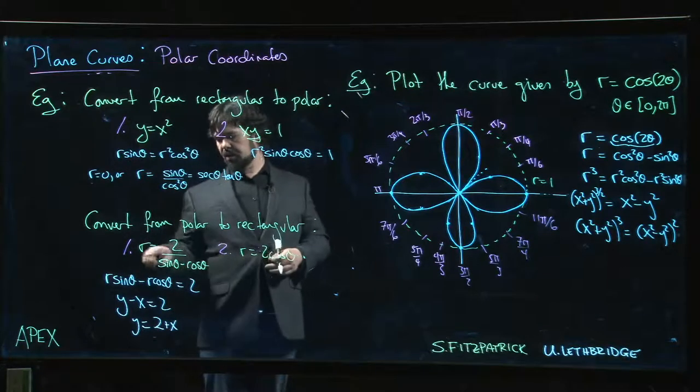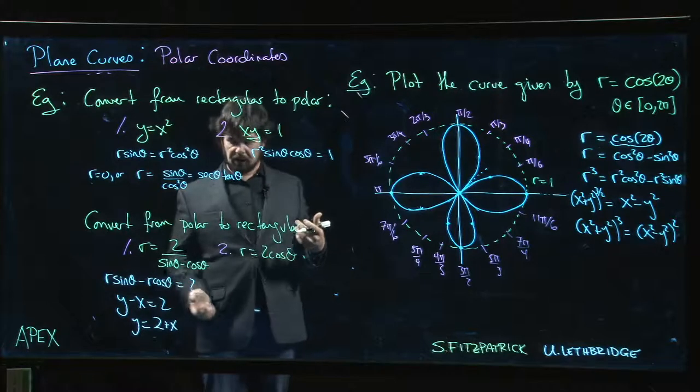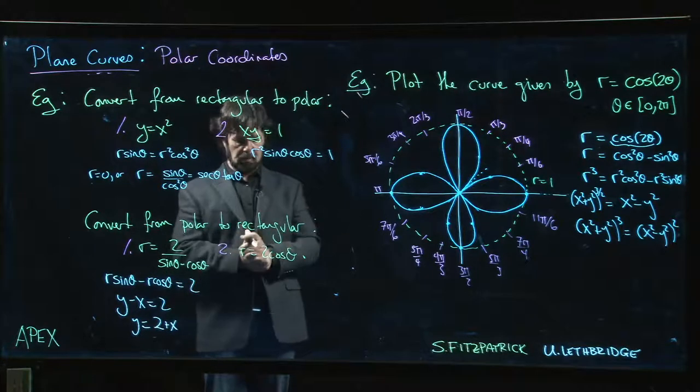Typically, you're trying to get r sin θ and r cos θ to show up because that will give you y and x, or r² because r² will give you x² + y².